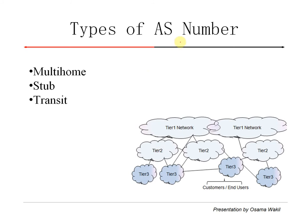There are different types of AS numbers. There are different types of AS, okay, not numbers. There is multi-home AS, stub AS, and transit AS.